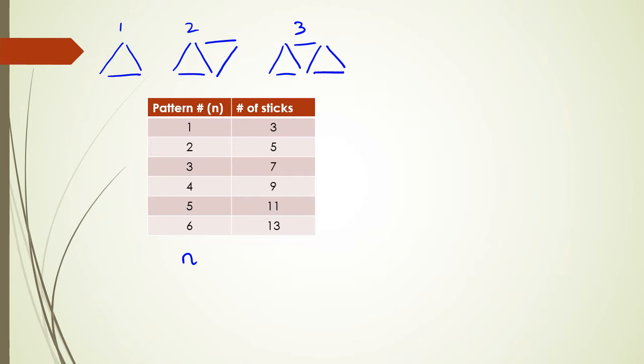So the way to do this is, first thing is, have a look at your number of sticks, how much it's actually increasing by. What you should be able to see is that each of these numbers are actually increasing by two. So we can say that number of sticks is increasing by two.